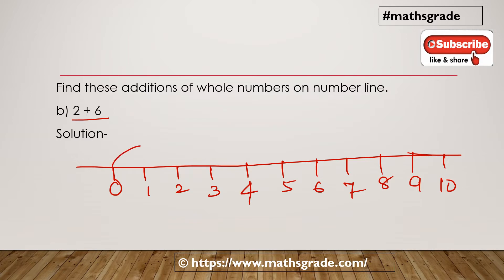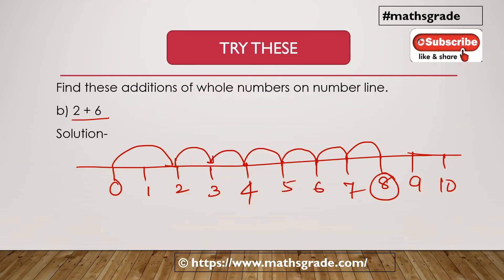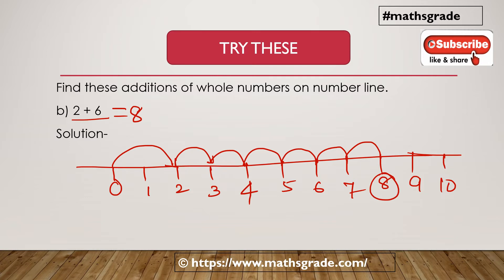Starting from 0, move 2 steps to reach 2. Then move 6 more steps: 1, 2, 3, 4, 5, 6 — reaching 8. So 2 plus 6 is 8. This is the representation on the number line — the addition of numbers 2 and 6 is 8, that is 2 plus 6 on the number line.